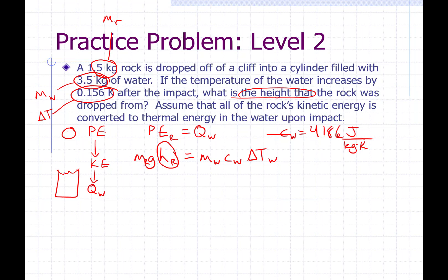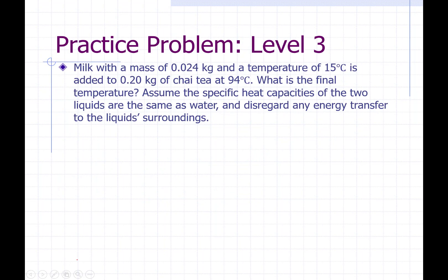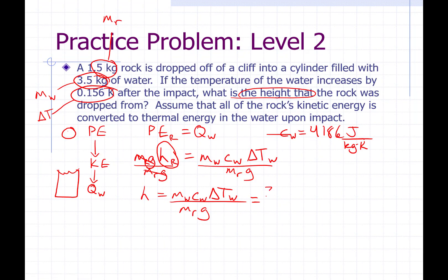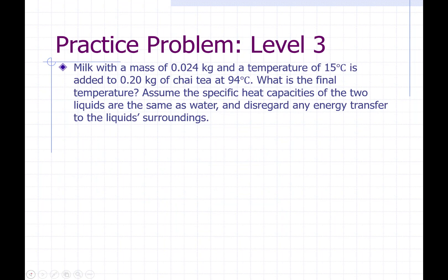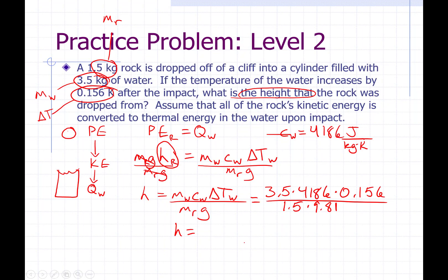To solve for H, we divide both sides by mass of the rock times G, and we get height equals mass of the water times C of the water times delta T of the water, over mass of the rock times G. Plugging in: 3.5 times 4186 times 0.156, divided by 1.5, divided by 9.81.